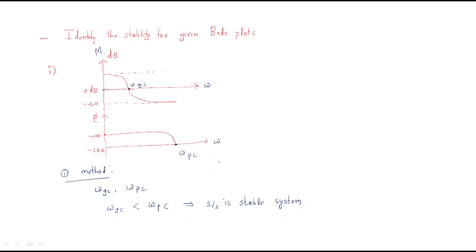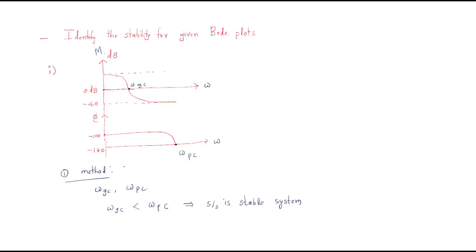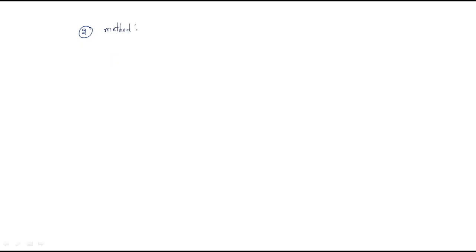We have identified the stability. We can go for another method — the second method. The second method uses the gain margin and the phase margin. The first method is for gain crossover frequency and phase crossover frequency; the second method is for gain margin and phase margin.